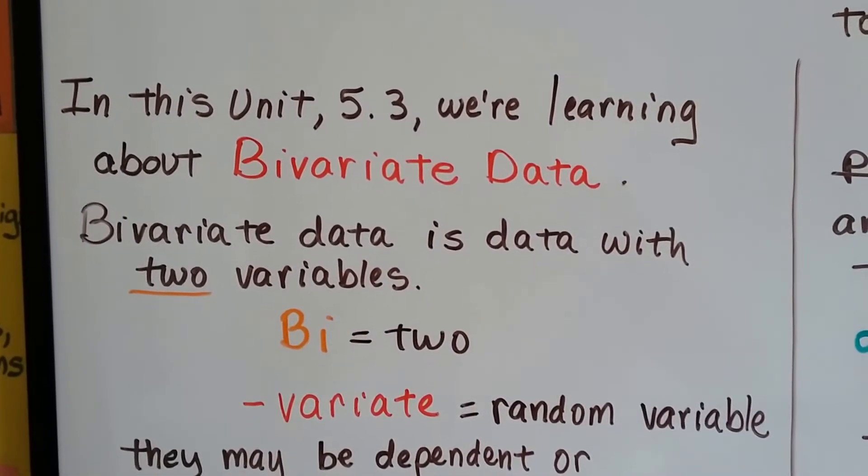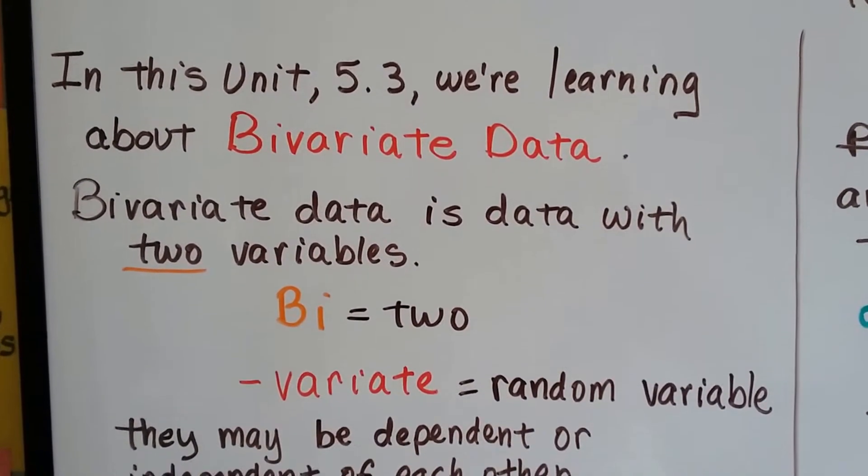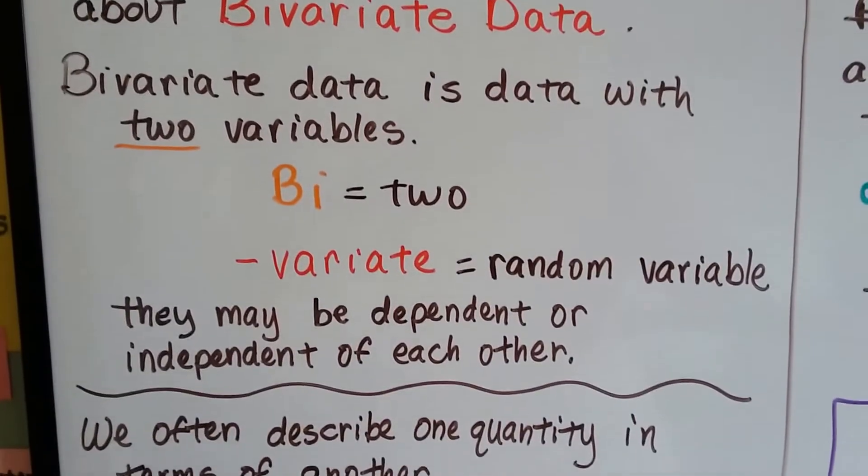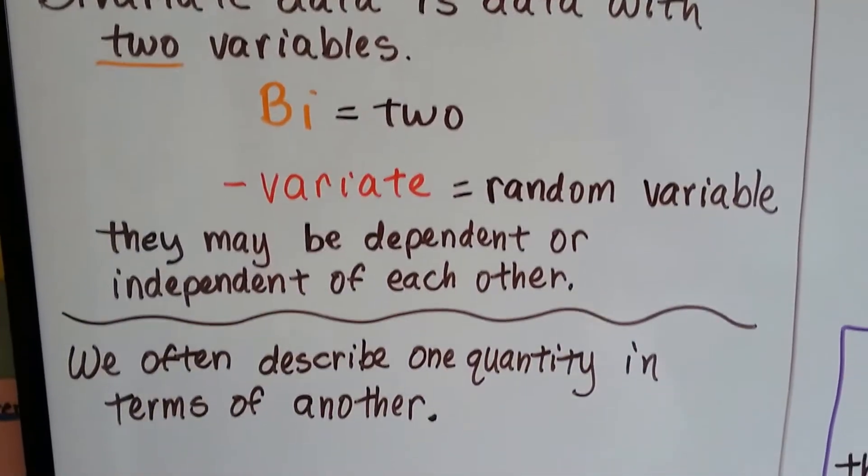Like bicycle has two wheels. Variate, that means random variable. They may be dependent or independent of each other.